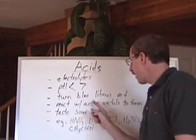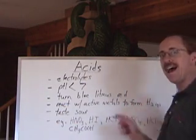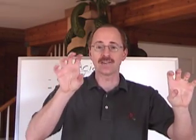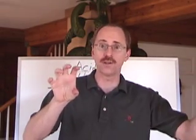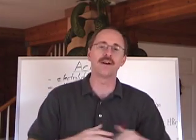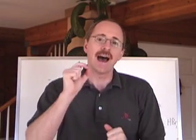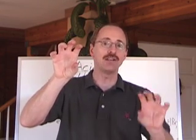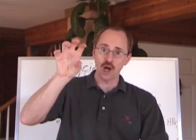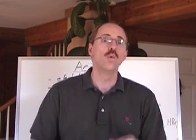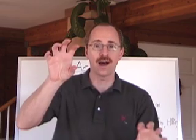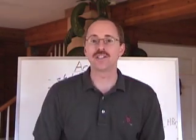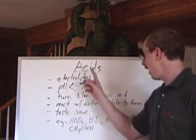Acids also react with active metals to form hydrogen gas. On that redox chart, the half-reaction that has hydrogen ion, H+, is across from 0.00 volts — it's the standard by which all others are compared. Any metal that is a reducing agent below this hydrogen ion will react spontaneously with that hydrogen ion, the metal will break down, and the hydrogen will turn into hydrogen gas. That's a property of acids as well.